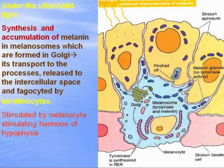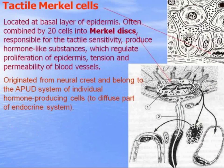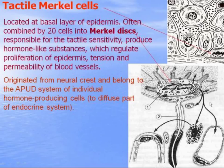Merkel cells are tactile cells located at the basal layer of the epidermis. They often combine into groups of 20 cells forming Merkel discs, and are responsible for tactile sensitivity. They produce GABA-like substances which regulate proliferation of the epidermis.